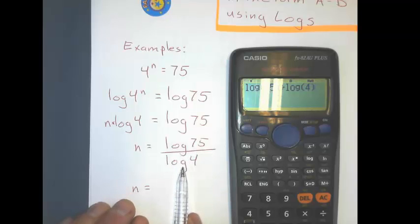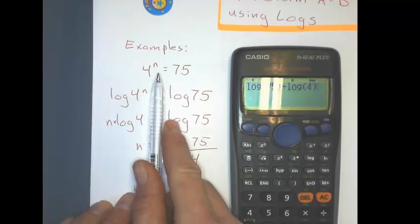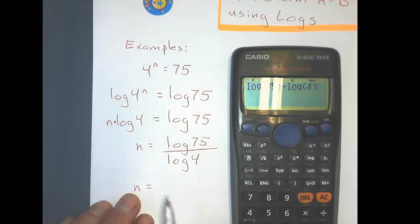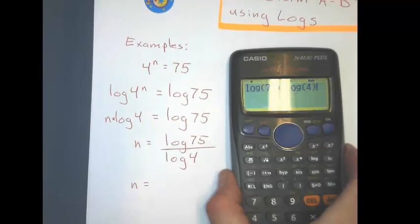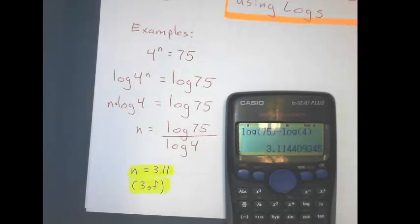Anyway, log 75 divided by log 4 will give me my solution, and my solution is what that exponent would be, and it's going to be a decimal, so I'll have to do some rounding. And I get about 3.11, and I set to 3 significant figures. If you want to do decimal places, you can. You don't have to do 3 significant figures. You can do 2 or 3 decimal places, but as long as you state what you've rounded it to, that's what you have to do.